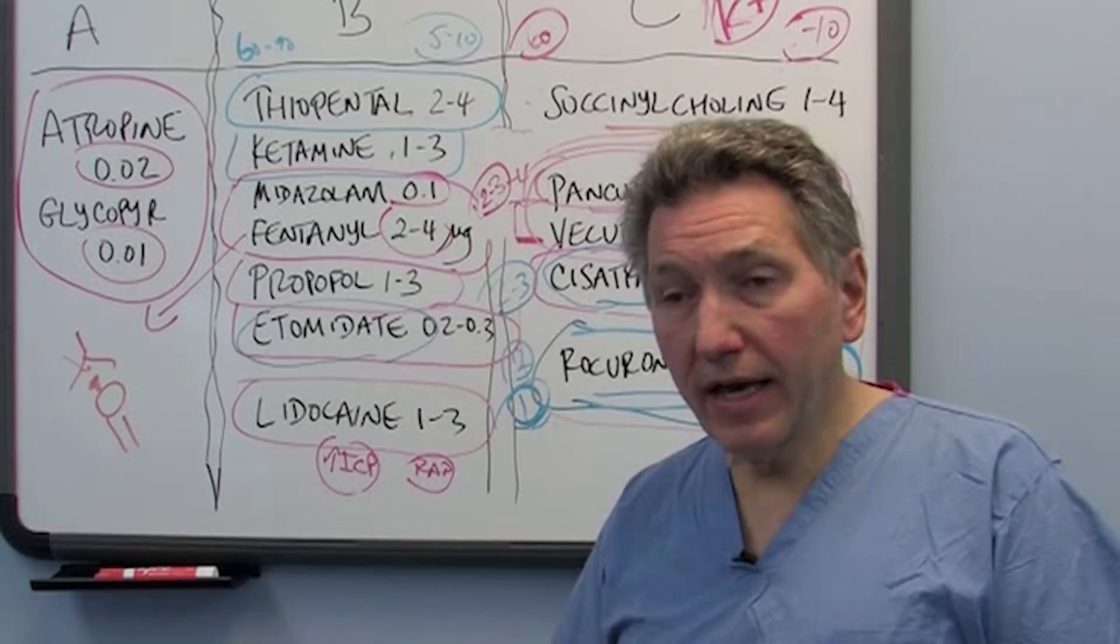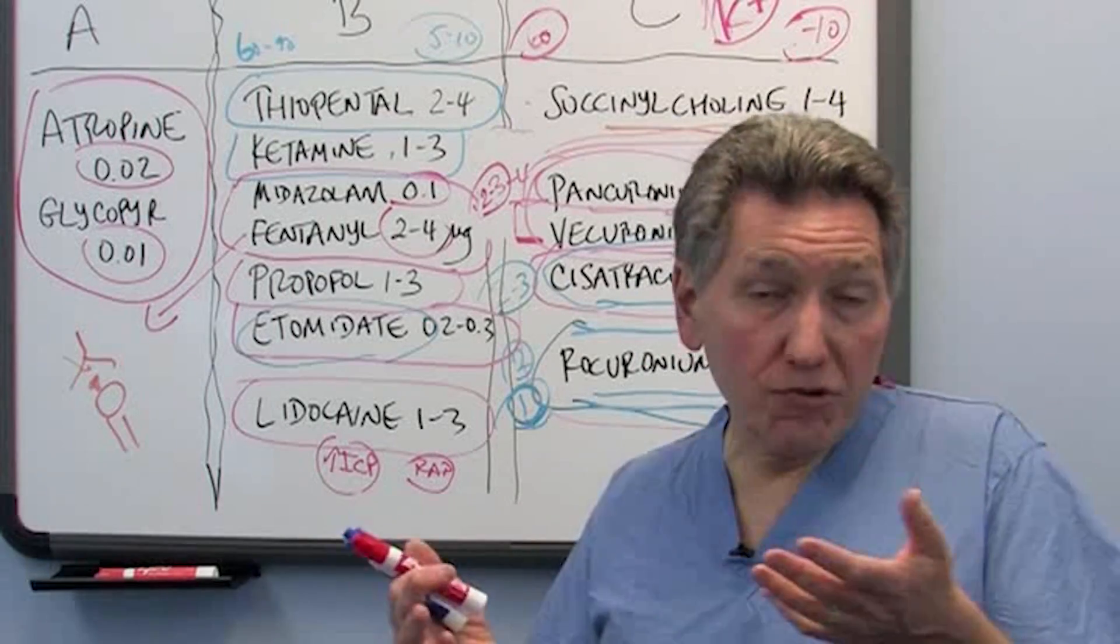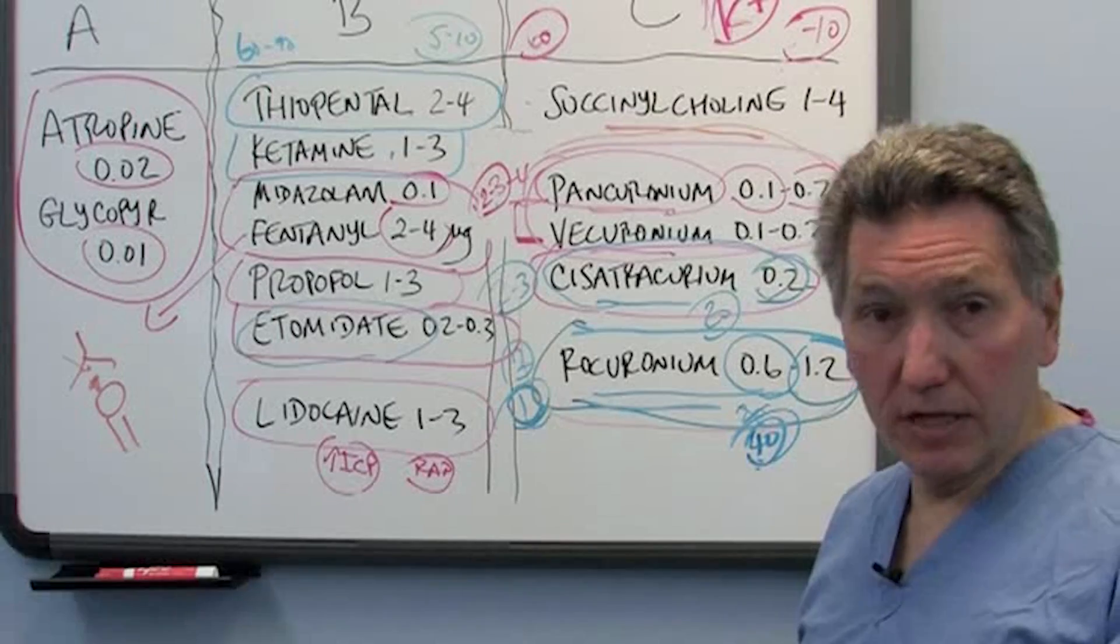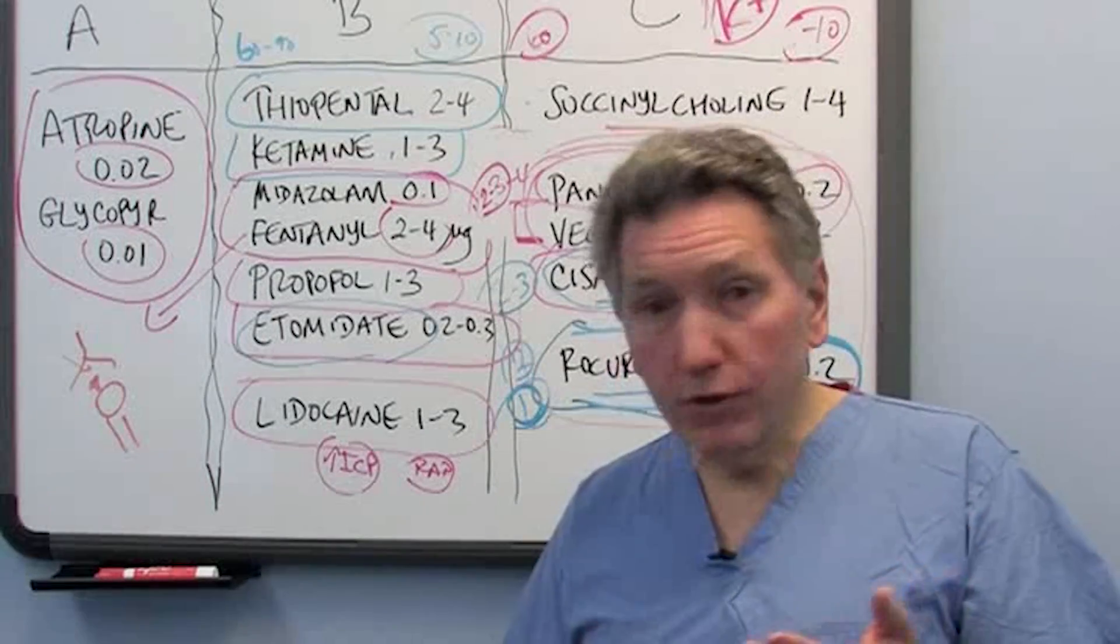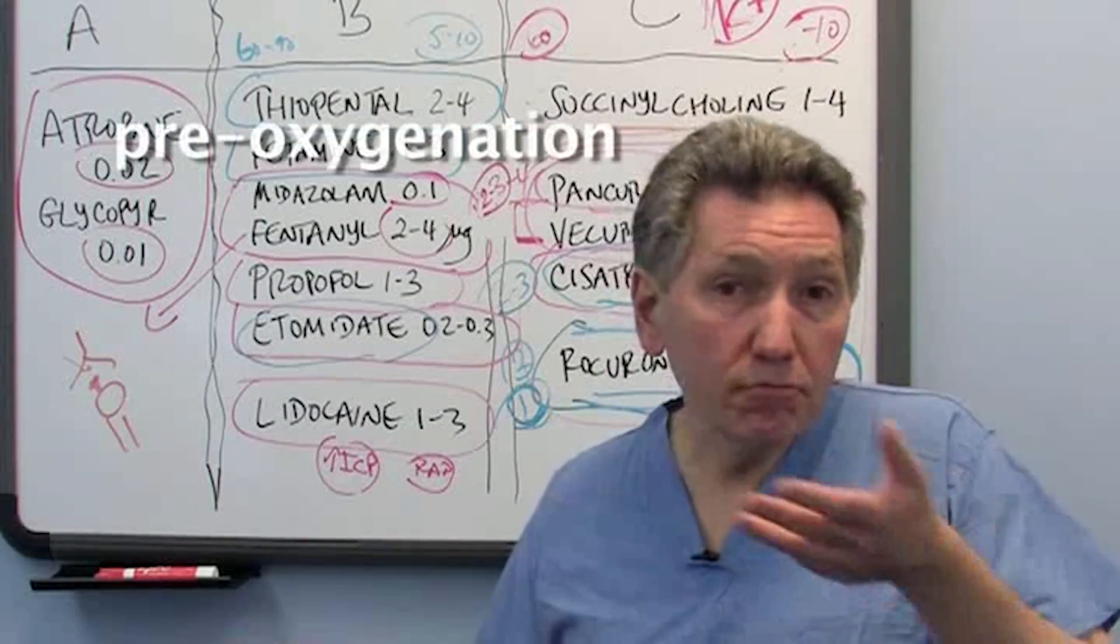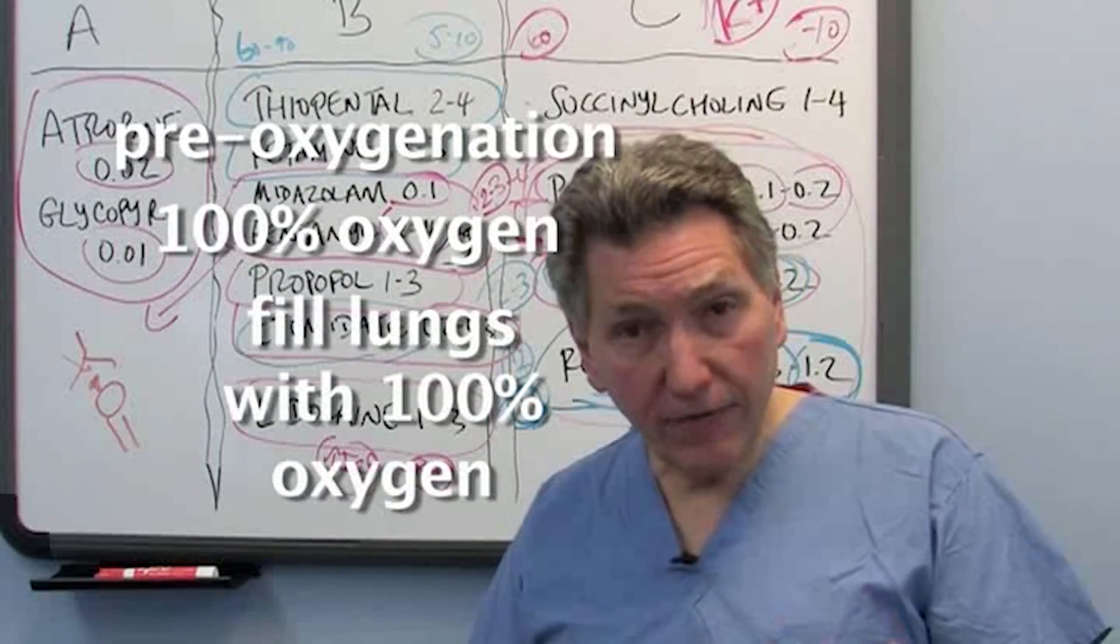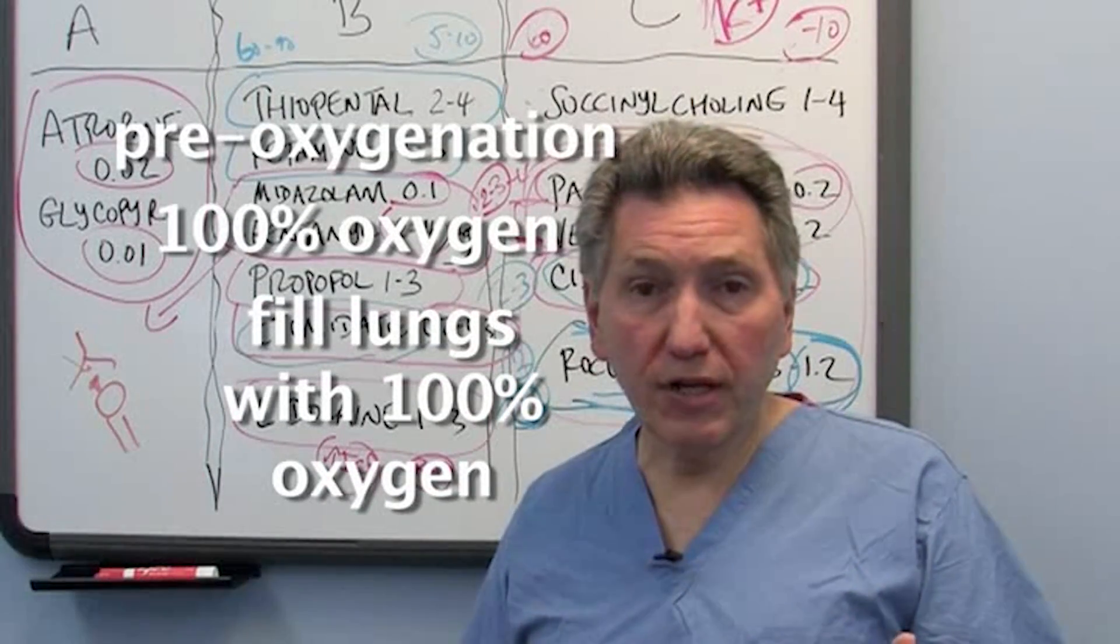But assuming that it's the average patient who looks reasonably easy to intubate, then you can go ahead with a Rapid Sequence Intubation. And what do you do? Start with pre-oxygenation, mask on the face, 100% oxygen, trying to fill the FRC up with 100% oxygen.